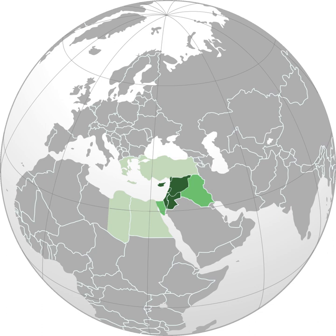The Levant is an approximate historical geographical term referring to a large area in the eastern Mediterranean. In its narrowest sense, it is equivalent to the historical region of Syria. In its widest historical sense, the Levant included all of the eastern Mediterranean with its islands, that is, all of the countries along the eastern Mediterranean shores, extending from Greece to Cyrenaica.